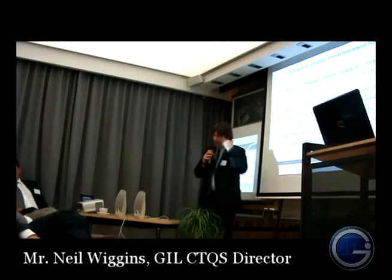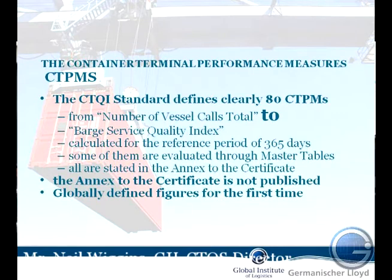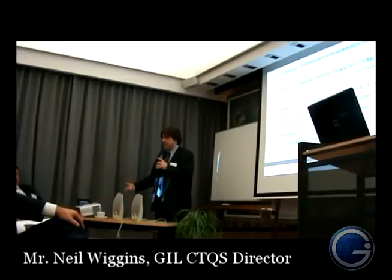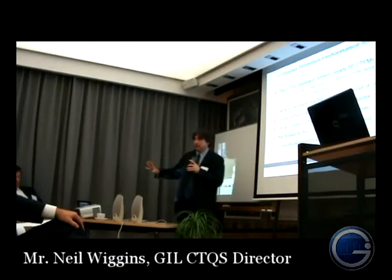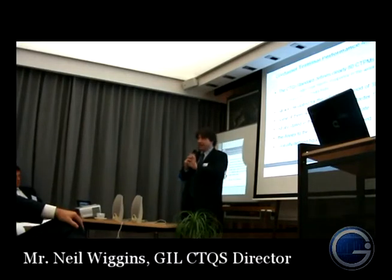Within the CTQI and CTQS, we clearly define 80 container terminal performance measures. These are based on common metrics — the definition is common, worked out with the stakeholders that Kieran described briefly. This is the key: we're all talking about the same thing. When we say gross crane productivity, we have a definition for it in the standard, and that is applied at terminal A, terminal B, terminal C, terminal D, and so on. So we all know, when we say gross crane productivity, exactly what we're talking about.